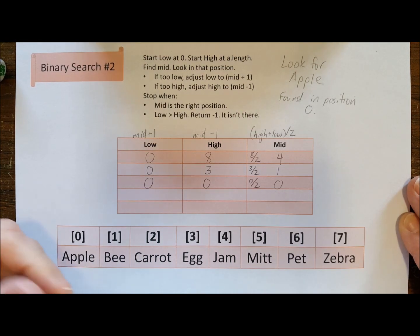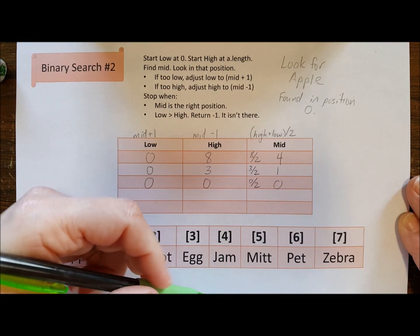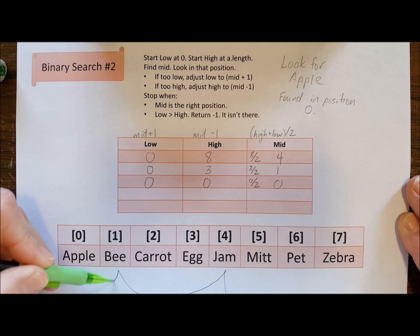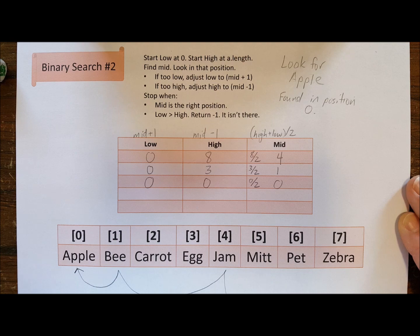And if I'm tracing it on the array I'm going to start with my mid value, so I'm going to start with four and then down to one and then down to zero. And those are the spots that I searched.